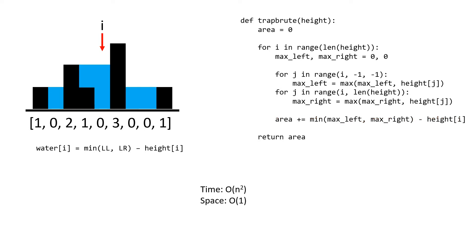The time complexity for this brute force algorithm is O(n²) because for each position we must iterate through the entire array to calculate the largest left and largest right. For space we have constant space because we aren't allocating any extra memory aside from a constant number of variables.